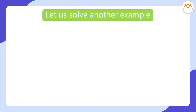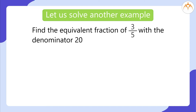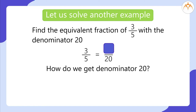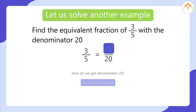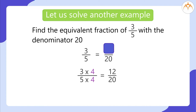Let us solve another example. Find the equivalent fraction of 3 divided by 5 with the denominator 20. 3 divided by 5 is equal to blank divided by 20. How do we get denominator 20? By multiplying by 4. So, 3 multiplied by 4, divided by 5 multiplied by 4, which is equal to 12 divided by 20.